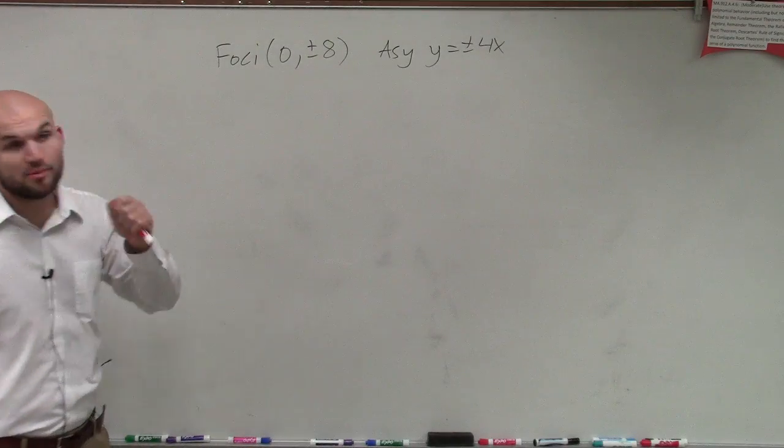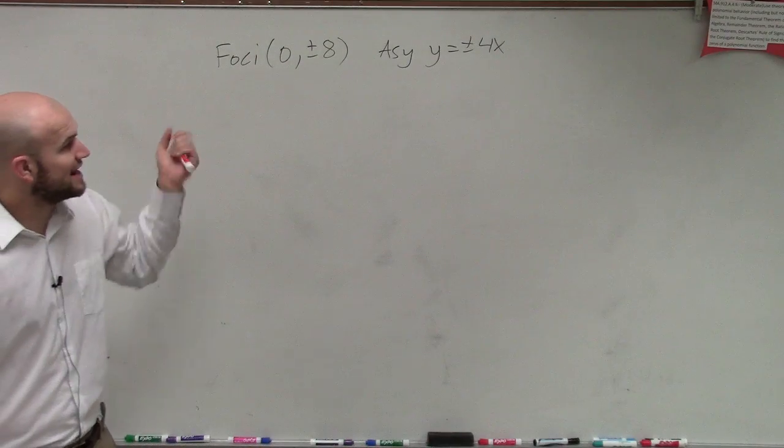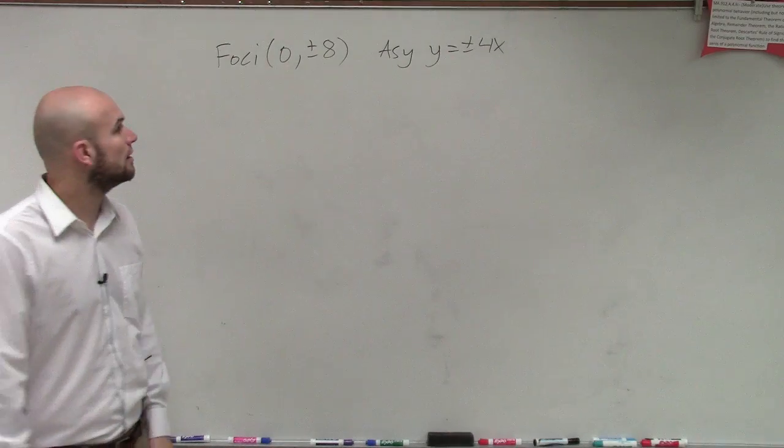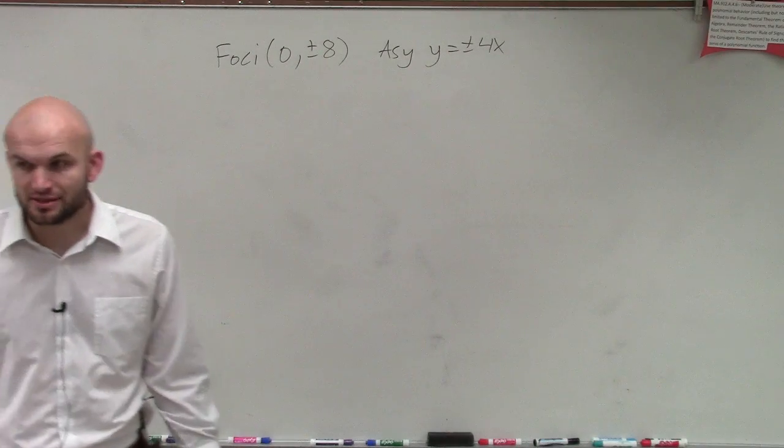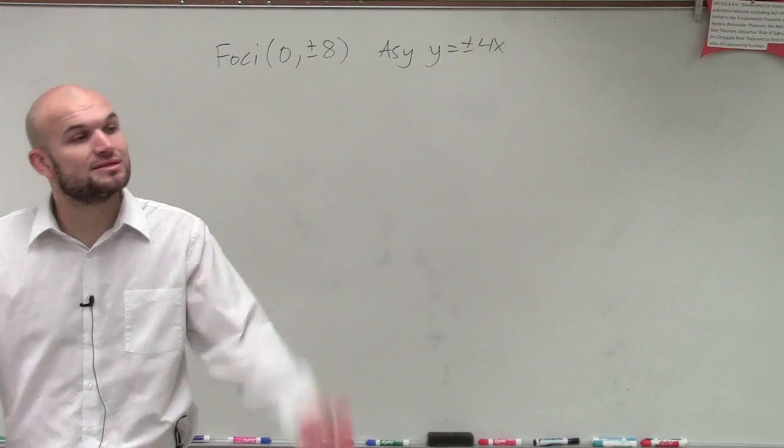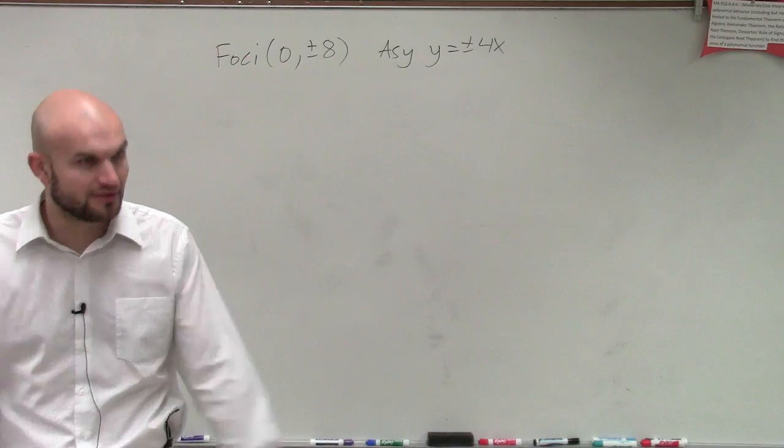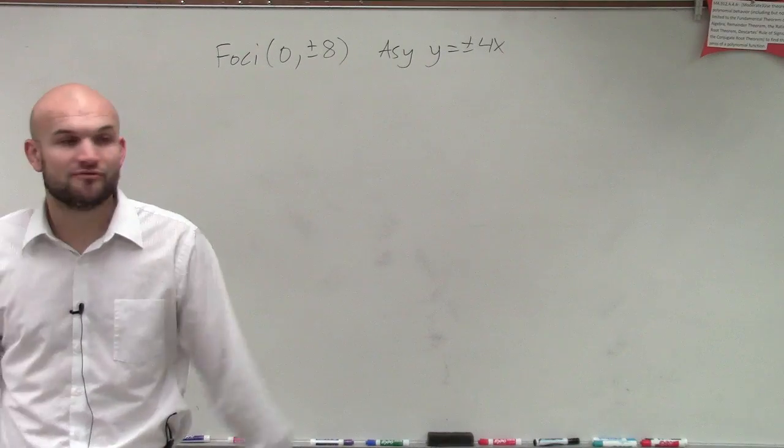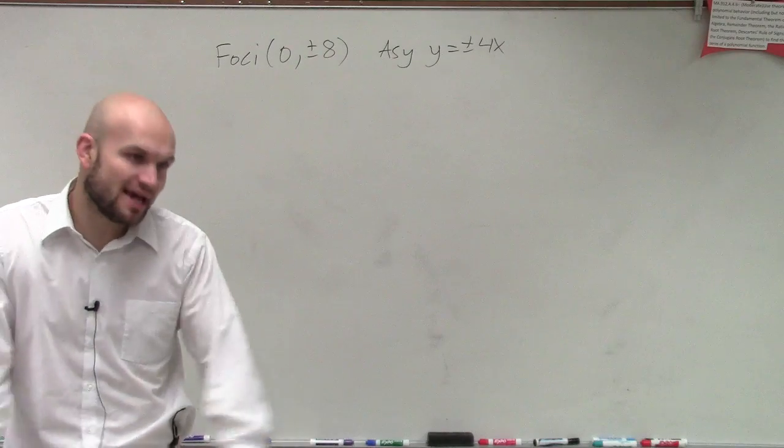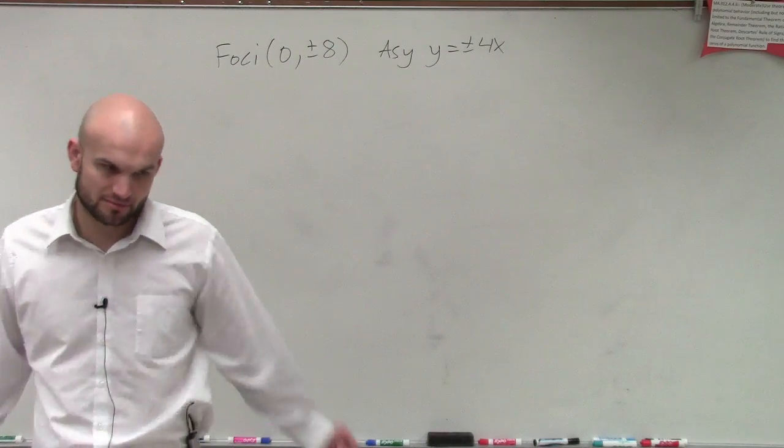Alright, so we have the foci at 0, comma, plus or minus 8, and we have an asymptote of y equals 4x. First of all, the main important thing is we need to determine is this going to be a vertical or a horizontal. My foci is going to be plus or minus on the k, so we know that it's going to be a vertical.